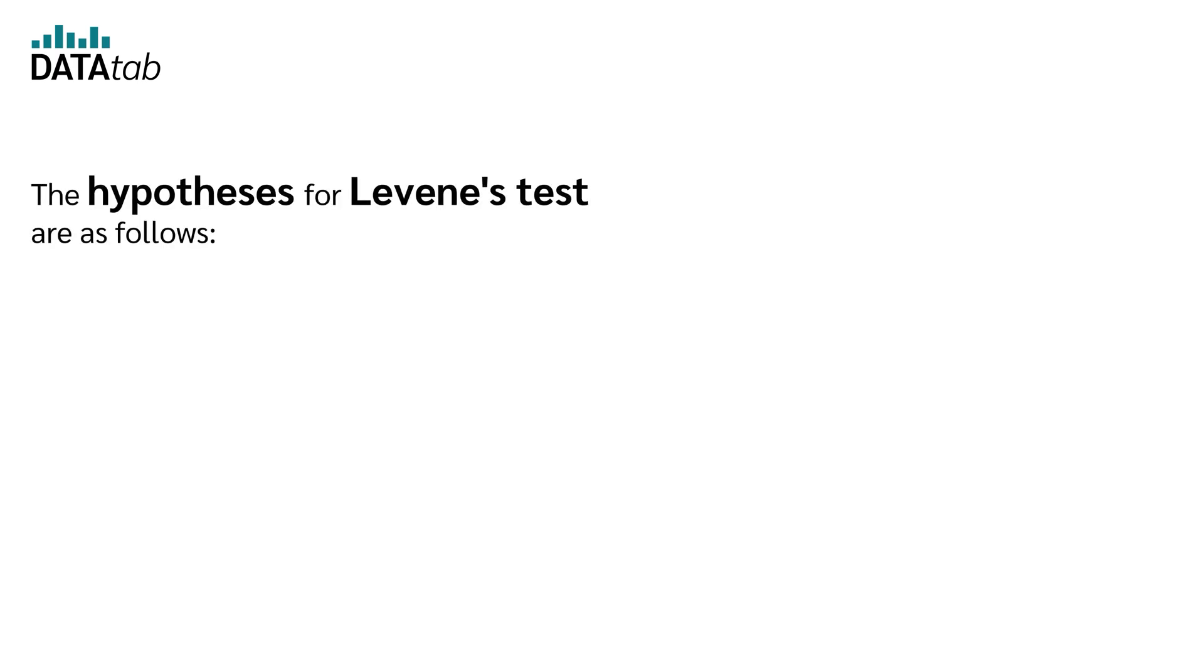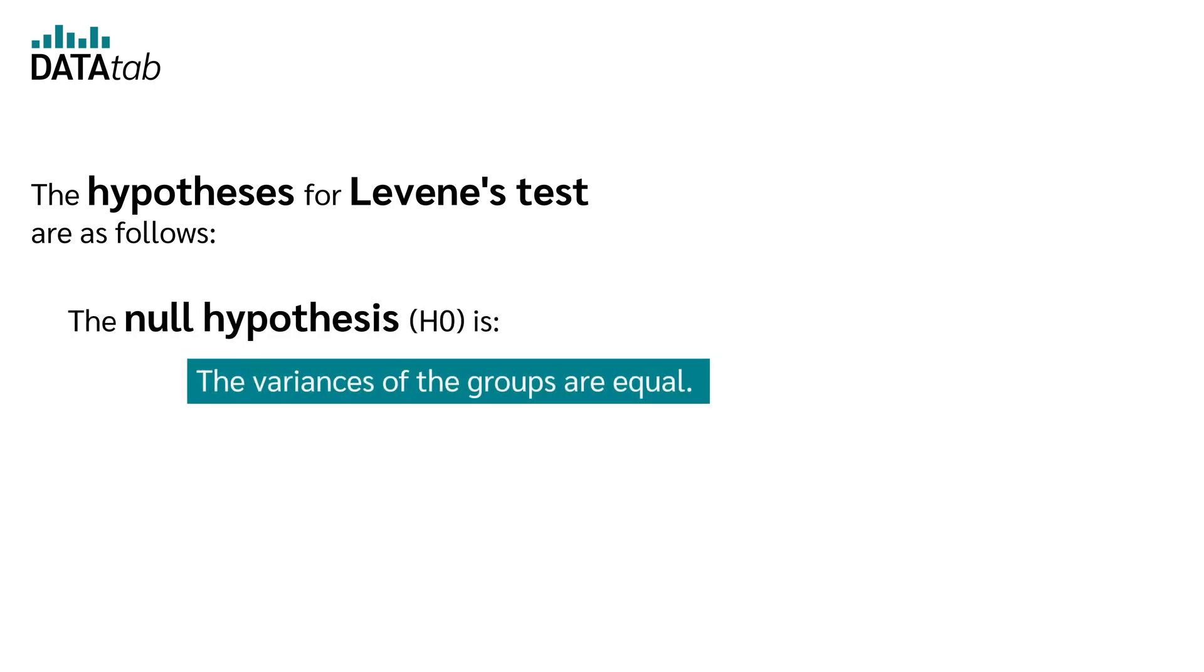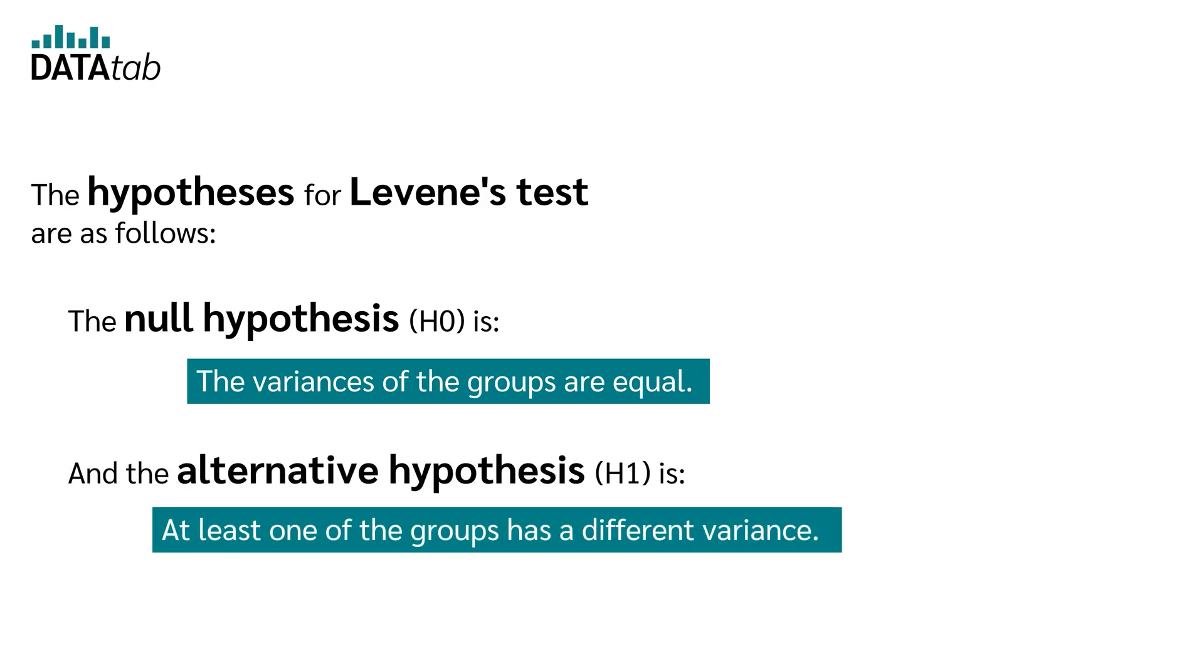The hypotheses for Levene's test are as follows. The null hypothesis is, the variances of the groups are equal. And the alternative hypothesis is, at least one of the groups has a different variance.